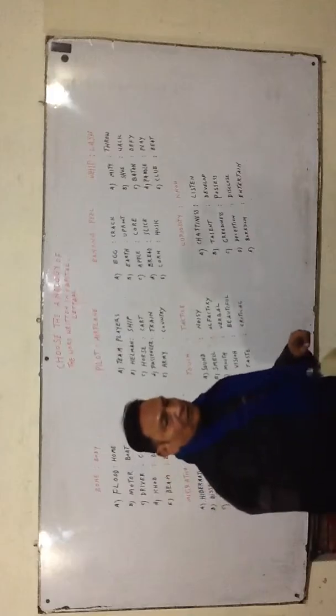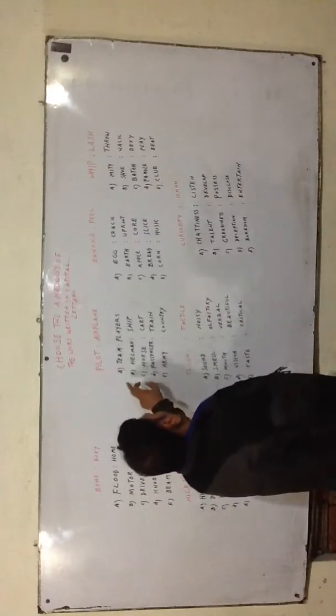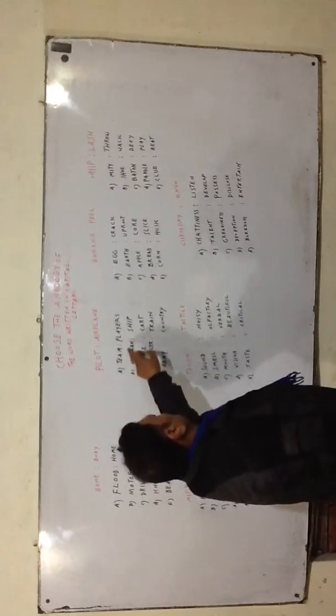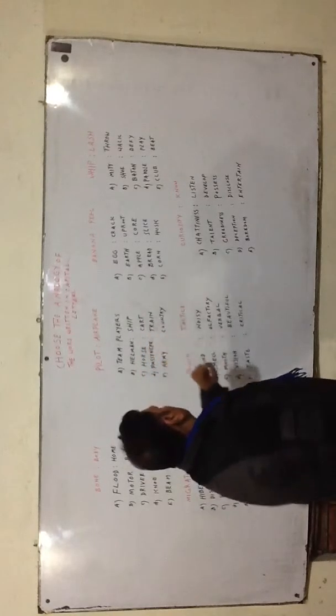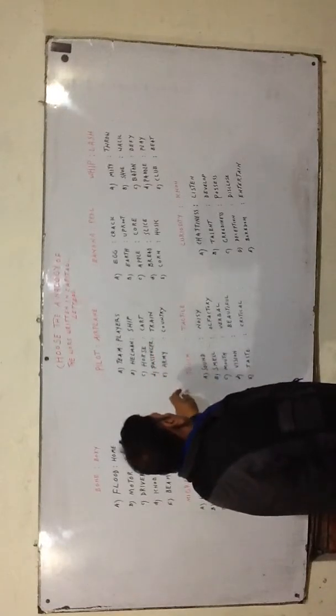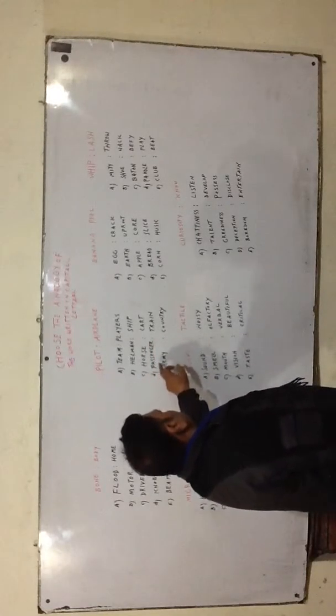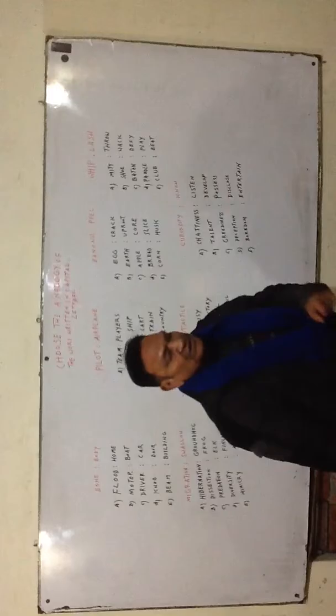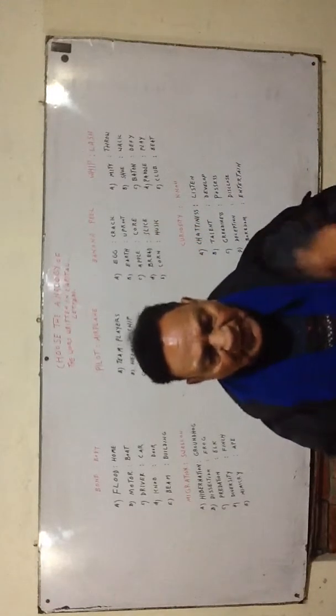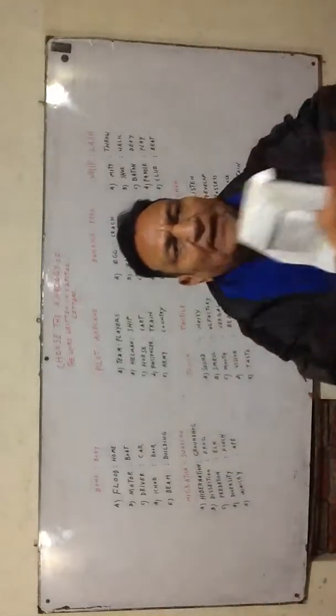Option A: team players, option B: helmsman ship, option C: horse cart, option D: passenger train, option E: army country. The question is, first of all, we should try to create a similarity between the two capitalized words.